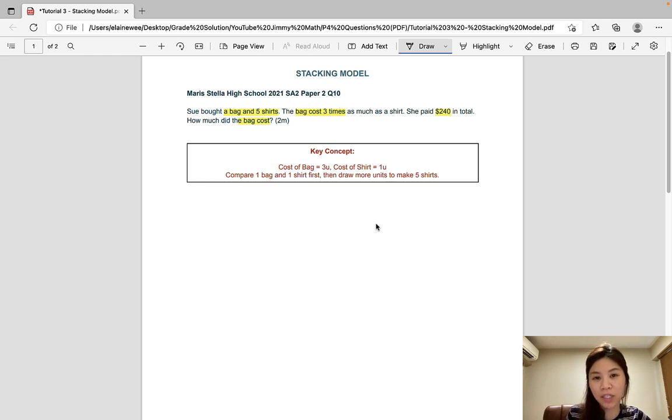The key concept of this question is that the cost of one bag is three times the cost of one shirt. So when we are drawing the model, we compare one bag to one shirt first. And the bag would have three units, while the shirt would have one unit. So let's just compare one to one.